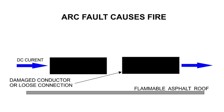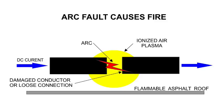Arc faults occur when a gap in a conductor carrying DC current creates a spark that produces ionized air. This generates heat which could start a fire. Causes include damaged conductors, loose connections, and corroded joints. This can be due to incorrect installation, mechanical damage, and aging.